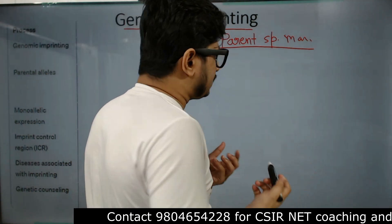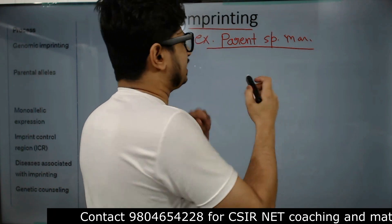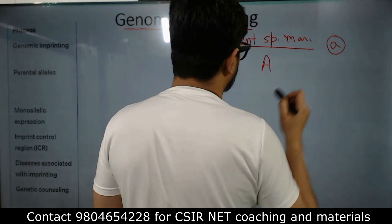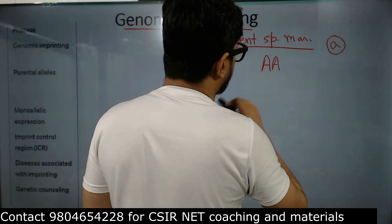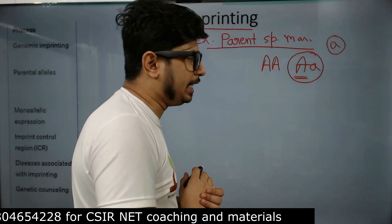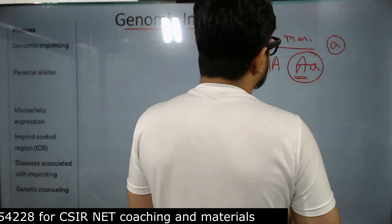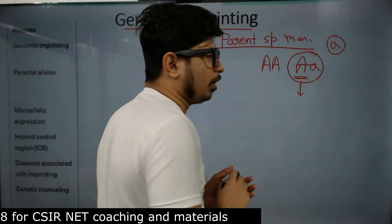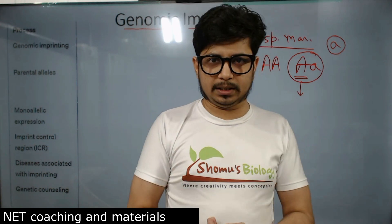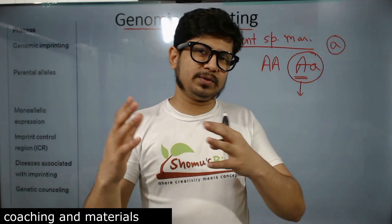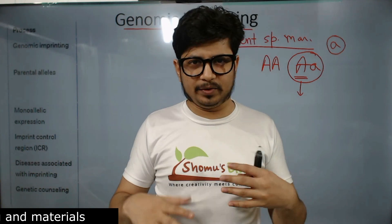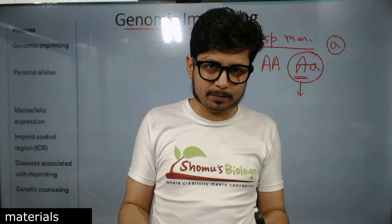Normally when we talk about genetics, let us imagine there is one particular gene — gene A. Capital A is a healthy, good copy; small a is a faulty copy. Now if an individual has capital A, small a, it still has one good copy of the gene, so it can work with no issue. It will always provide the impact of the good copy of the gene.